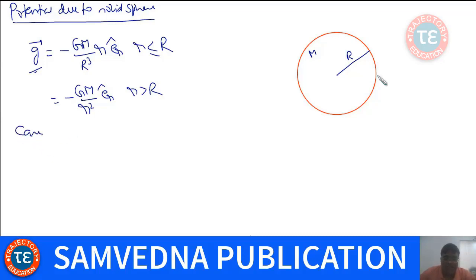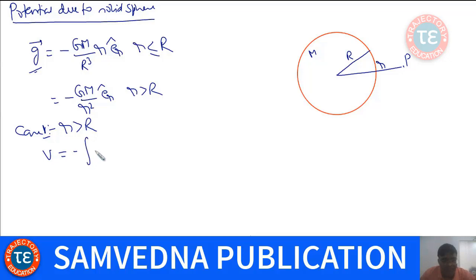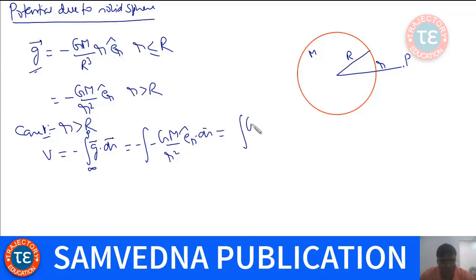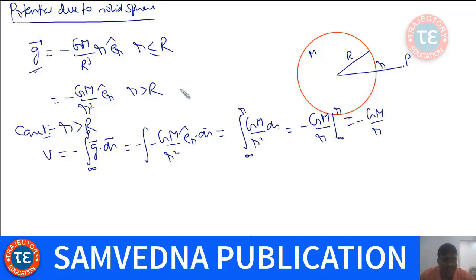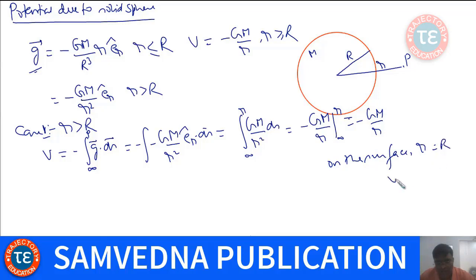For Case 1, the potential at a point outside the solid sphere at distance R is found by integrating G from infinity to R. Substituting G = -GM/R², this gives V = -GM/R. On the surface, substituting R equal to capital R, the potential is -GM/R.